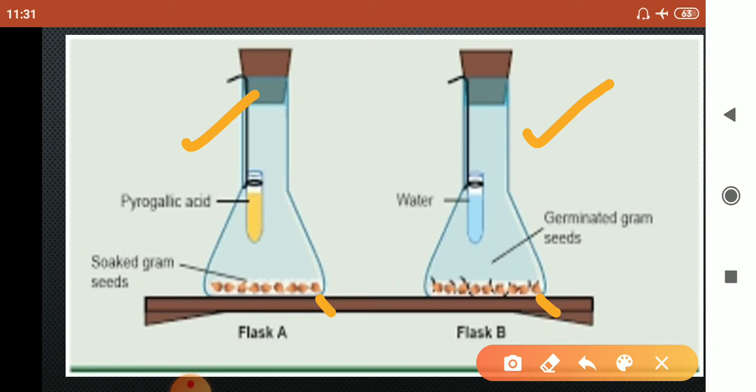...add the soaked gram seeds and we will hang a small tube in both the flasks. In Flask B we will add water in that tube, and in Flask A we will add alkaline pyrogallic acid. Remember children, we will...